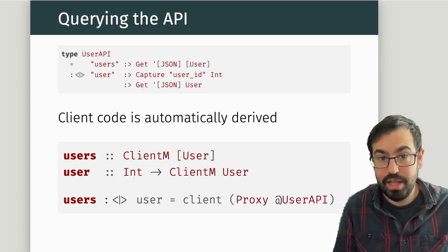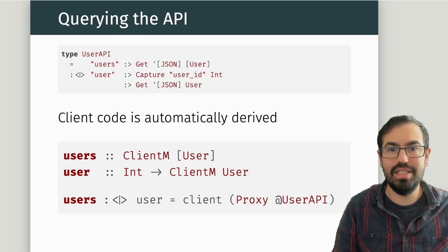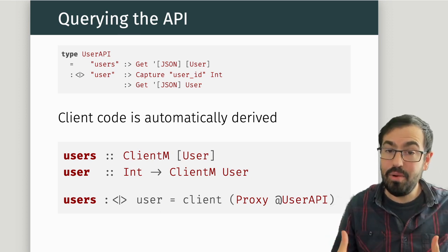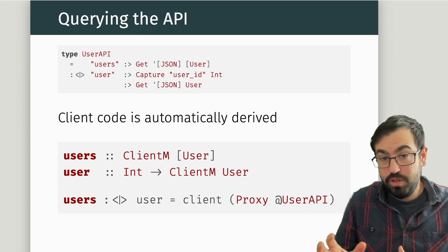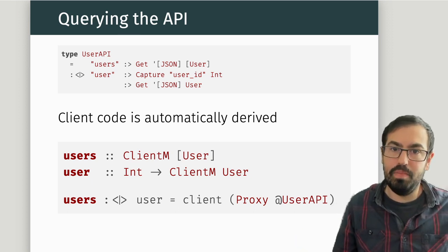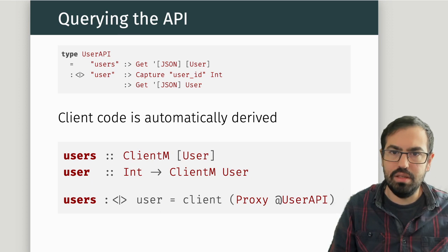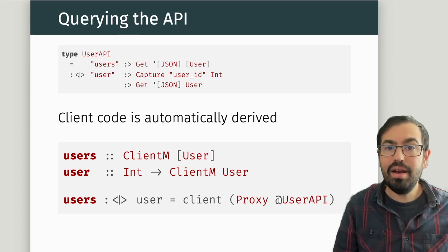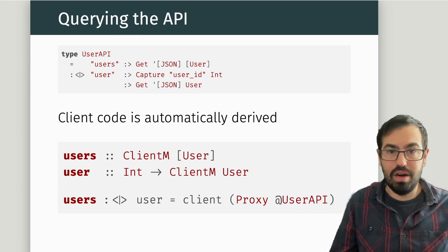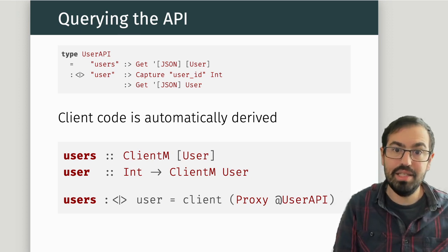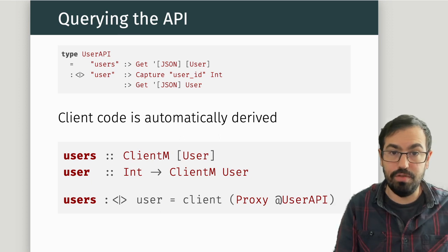Apart from serving the API, you can take this definition and generate a client out of it. You just call the client function and pass a proxy to specify the type you want. At compile time, those things are elaborated into actual clients, one for each route in your service.